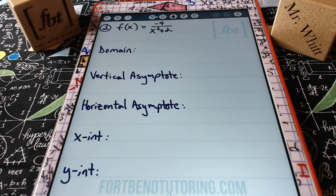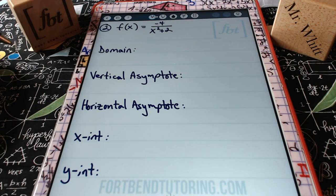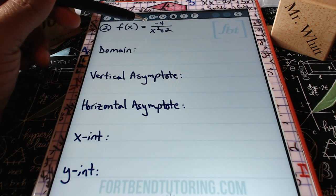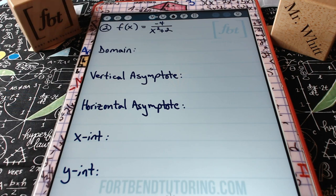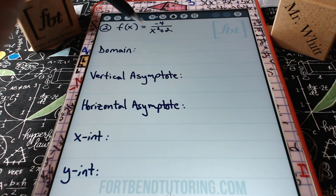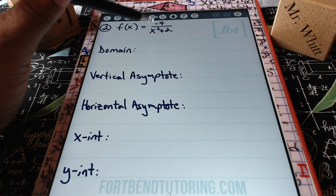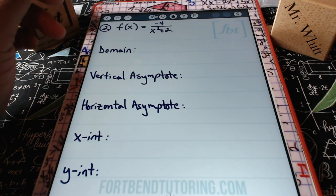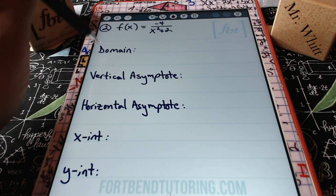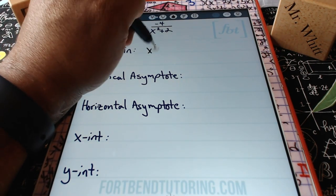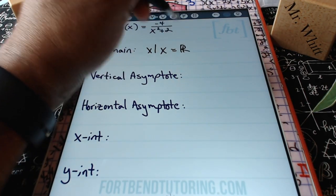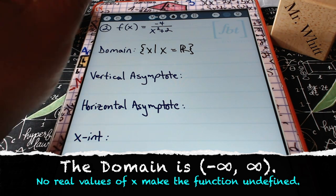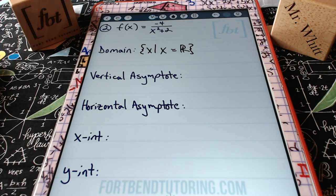Problem 2: f(x) = -4/(x²+2). One of the first things I like to do is factor the original function completely. The denominator x²+2 is similar to a sum of squares, which is not factorable using real numbers. Therefore, the domain is all real numbers — you can pick any value for x.